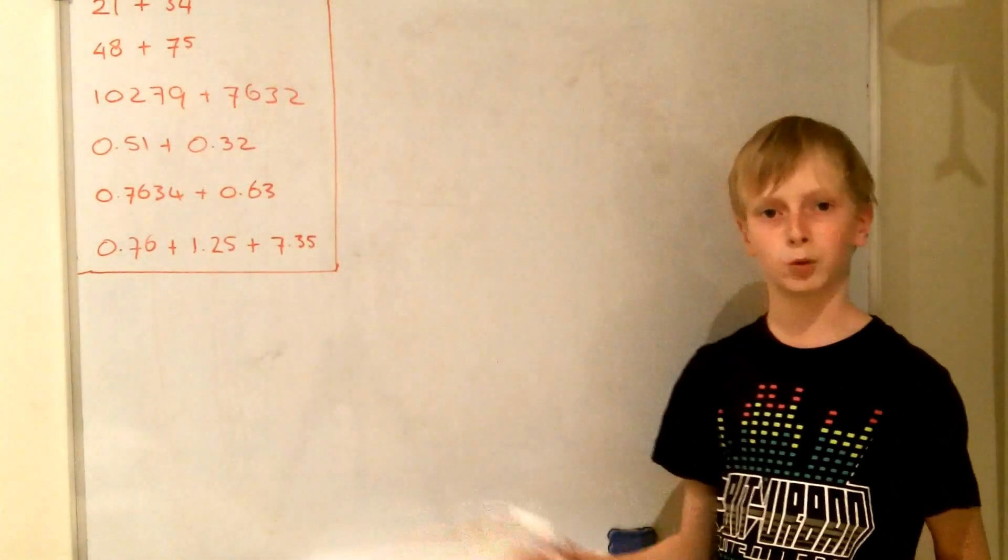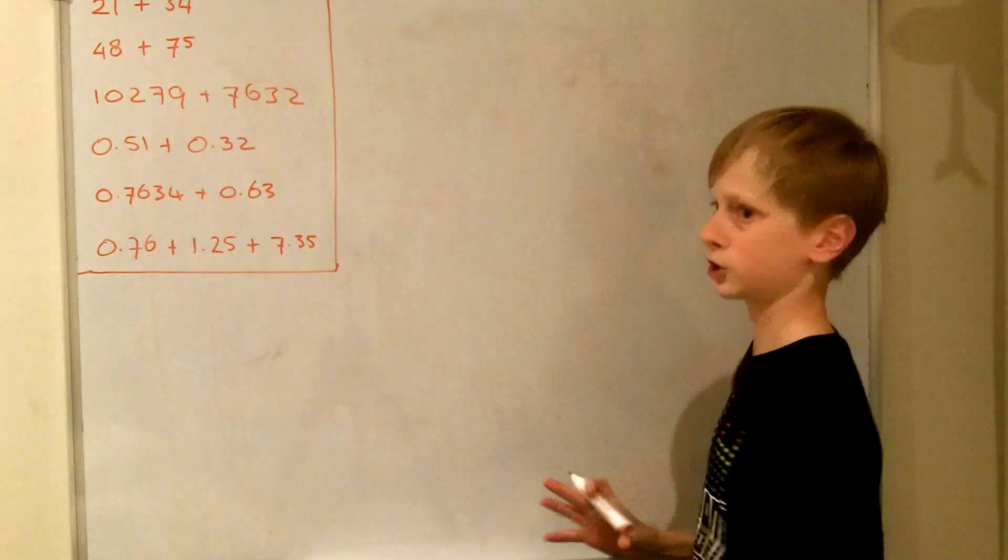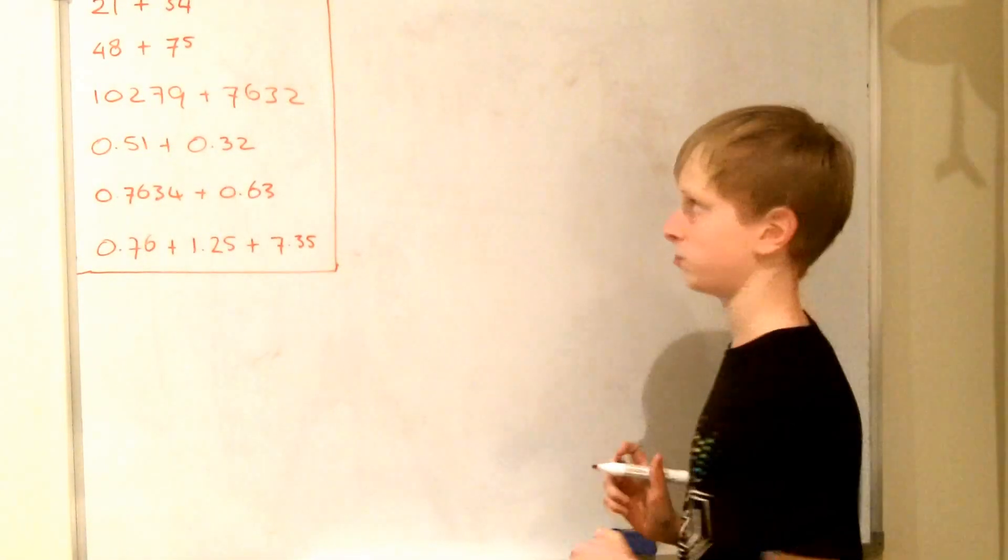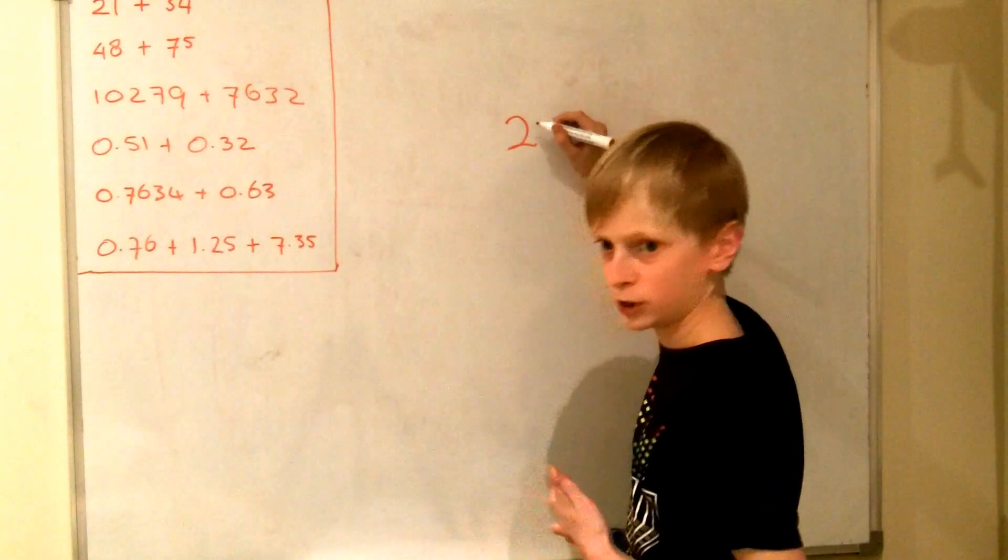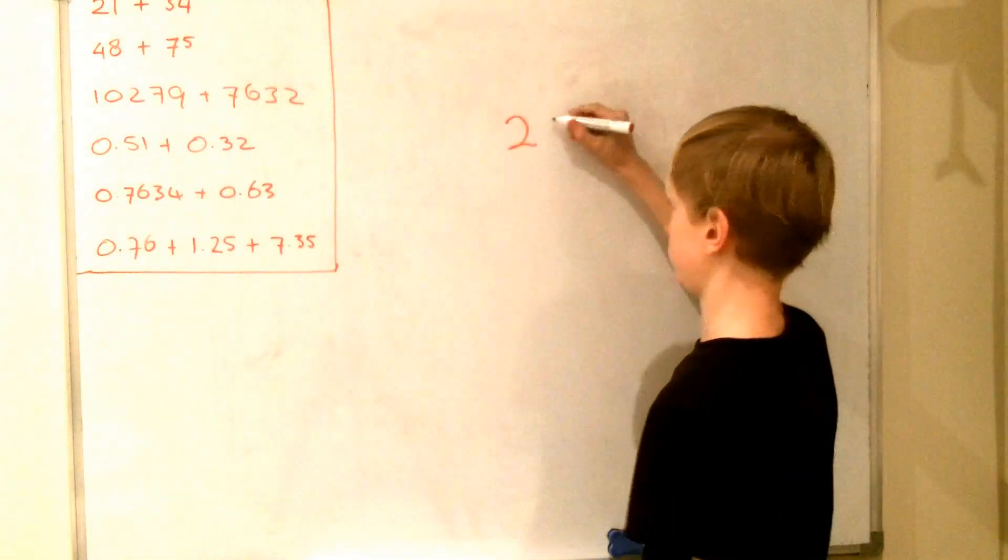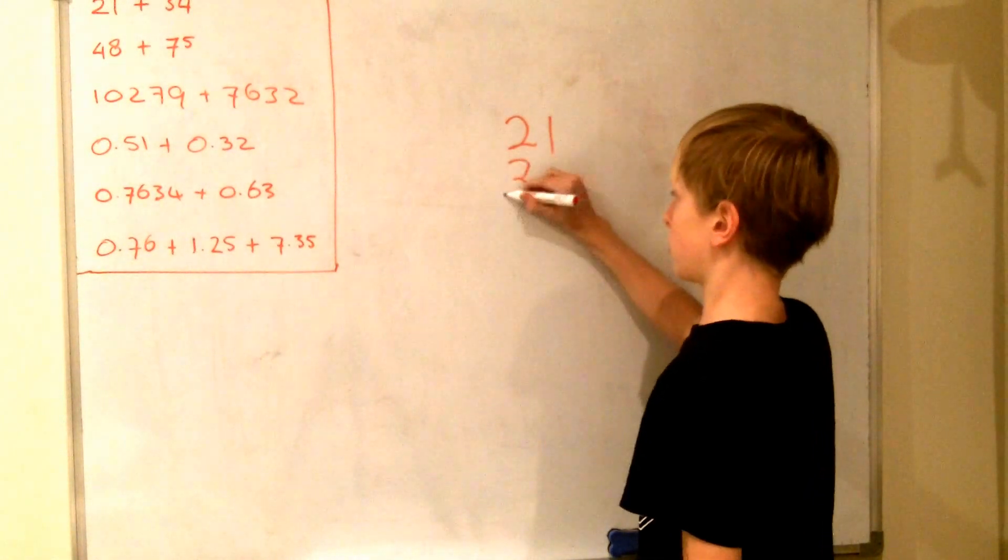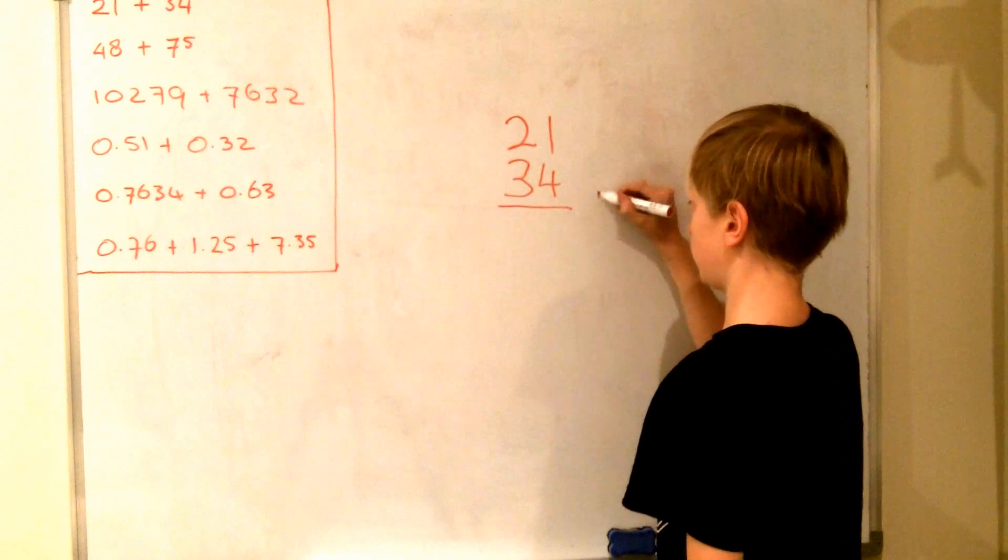This is just an easy one and it will be quicker to do it out of your head. But I'm going to show you how to do it because you have to start with an easy one just to show you the concept. So instead of just writing them normally next to each other we can also write them under each other. So we write 21 and we write 34 underneath it and we draw a line with a plus sign.